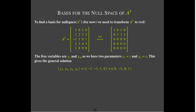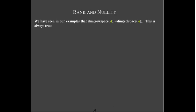Sure enough, if we were to go through and actually set up the two parameters for the free variables and calculate the solution space, we would see that any vector in that solution space can be written as a linear combination of those two vectors. So that gives us our basis.